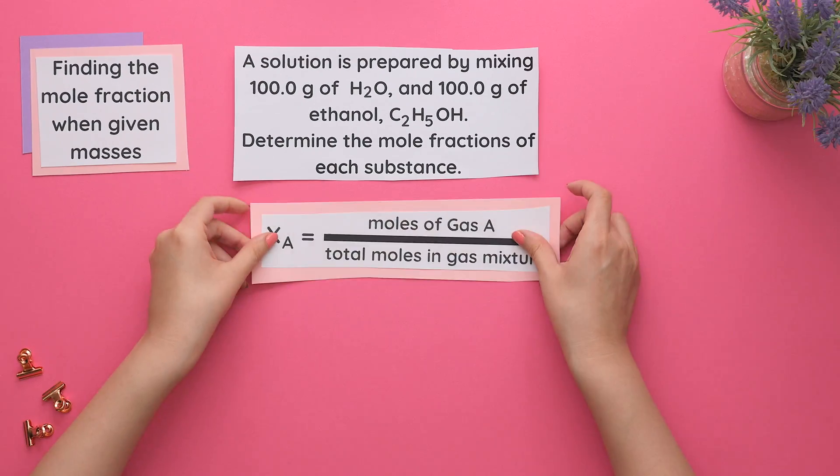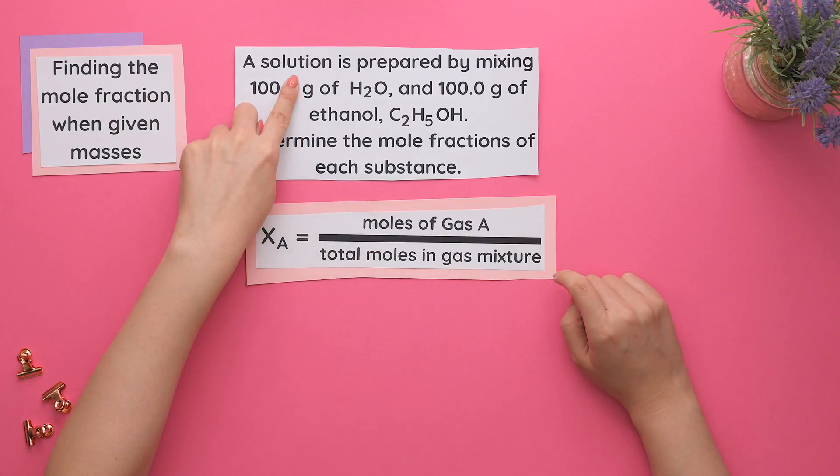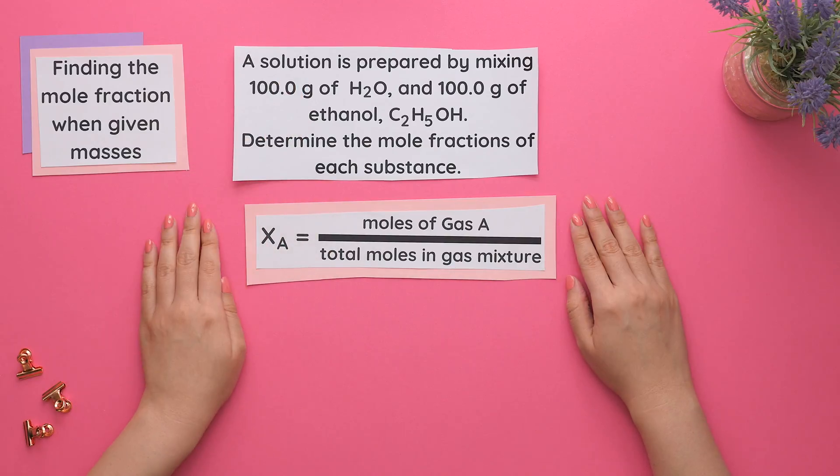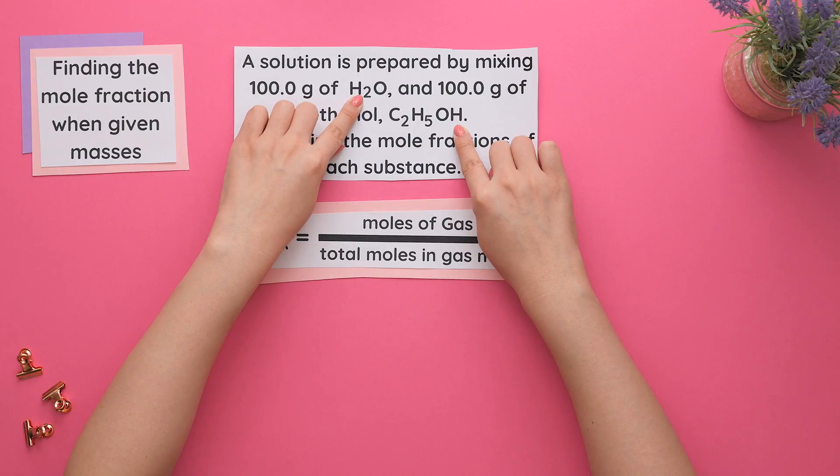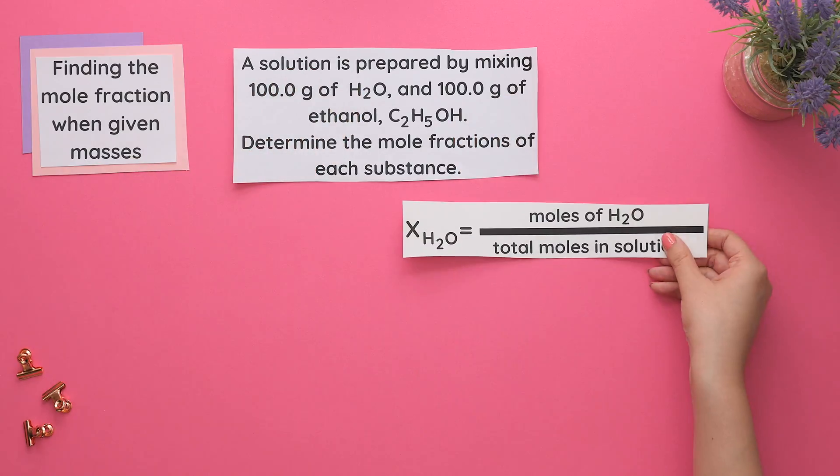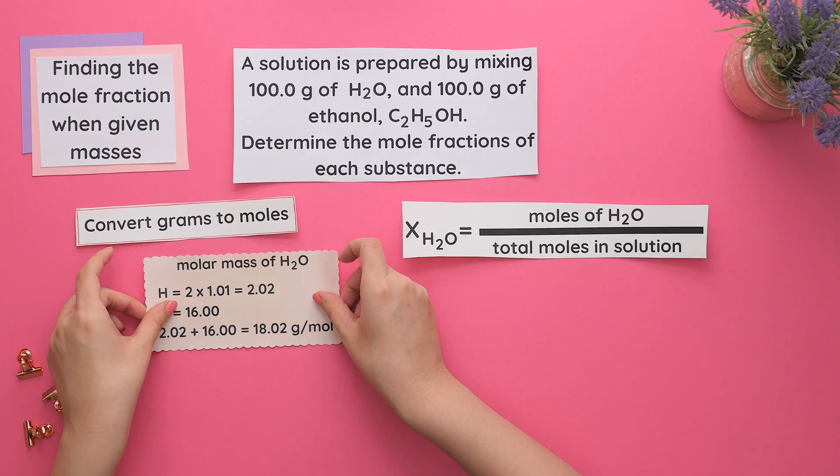We can use our mole fraction formula for either a gas mixture or in this case a solution. Since we are finding the mole fractions of each substance, we will alter the mole fraction formula for each specific substance of water and ethanol. We'll start by converting the grams of each substance to moles. To do this, we will find the molar mass of each substance.